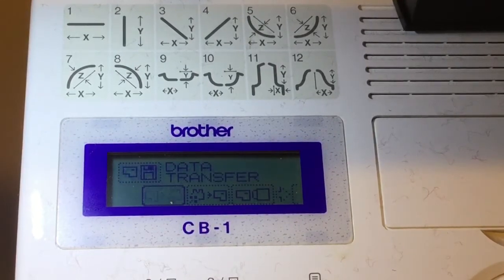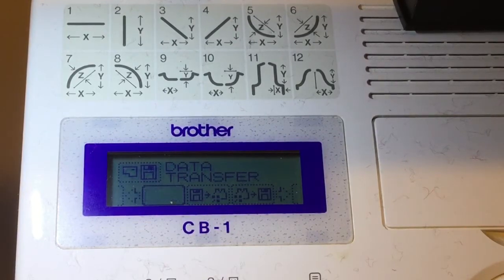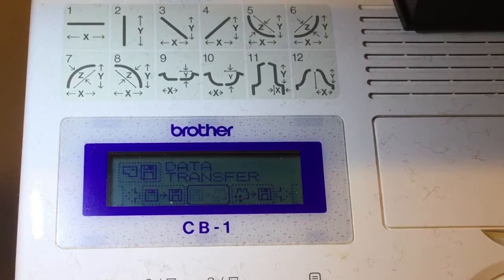That is cartridge to knitting. That is knitting machine to cartridge. That is erase from the cartridge. That is from a disk to a disk, so that's uploading to a disk. This one is disk to knitting. That's the one you want.